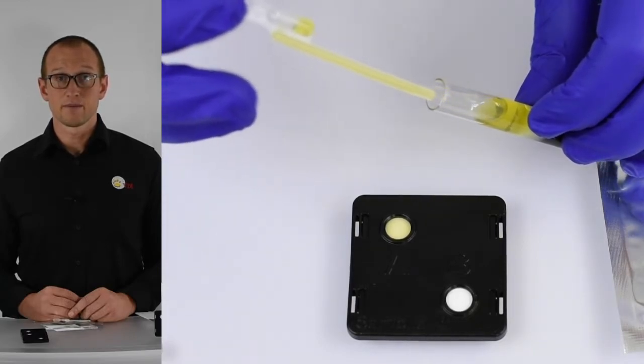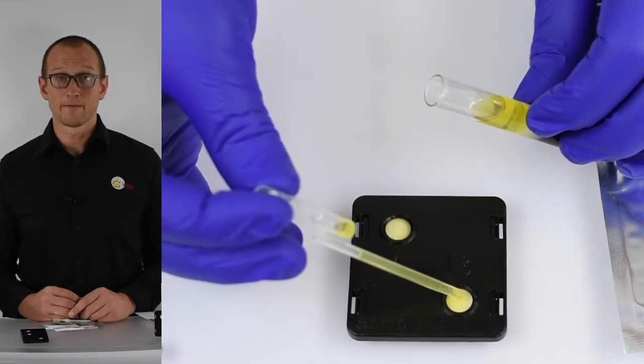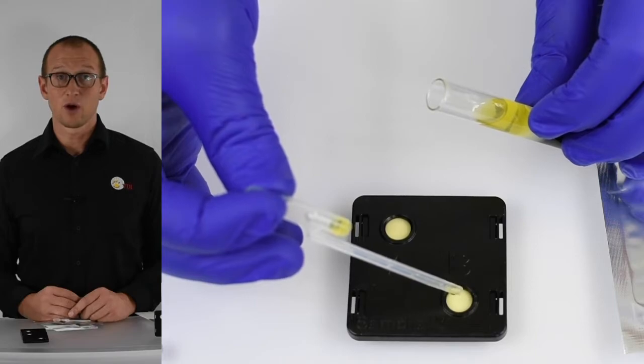If there's enough serum to fill the stem, repeat this process for well B. If not, do not fill well B.